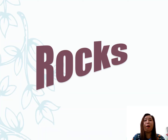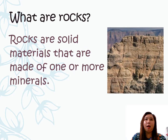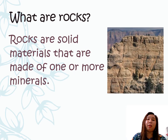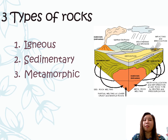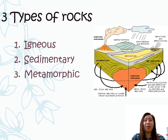Let us first talk about rocks. Rocks are solid materials that are made up of one or more minerals. And there are three types of rocks that are called igneous, sedimentary, and metamorphic rocks.